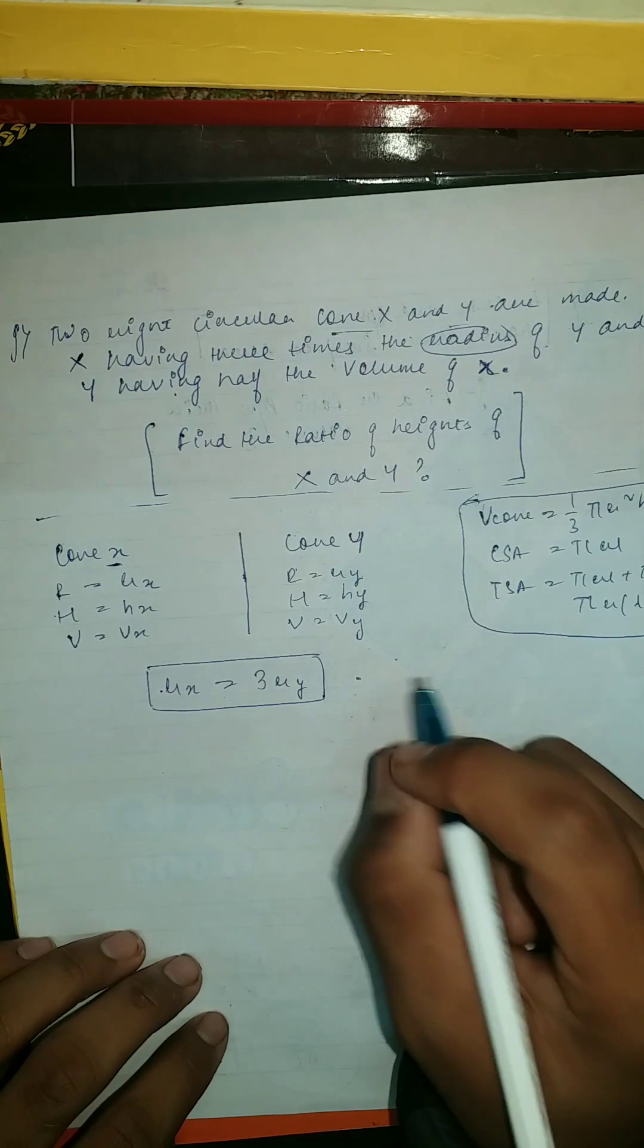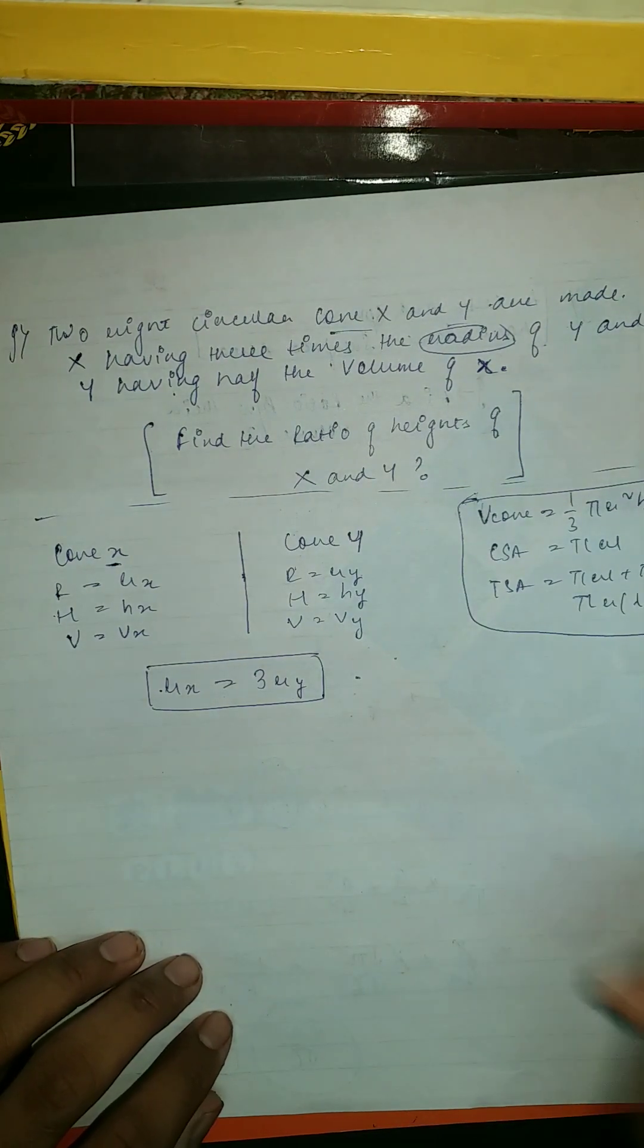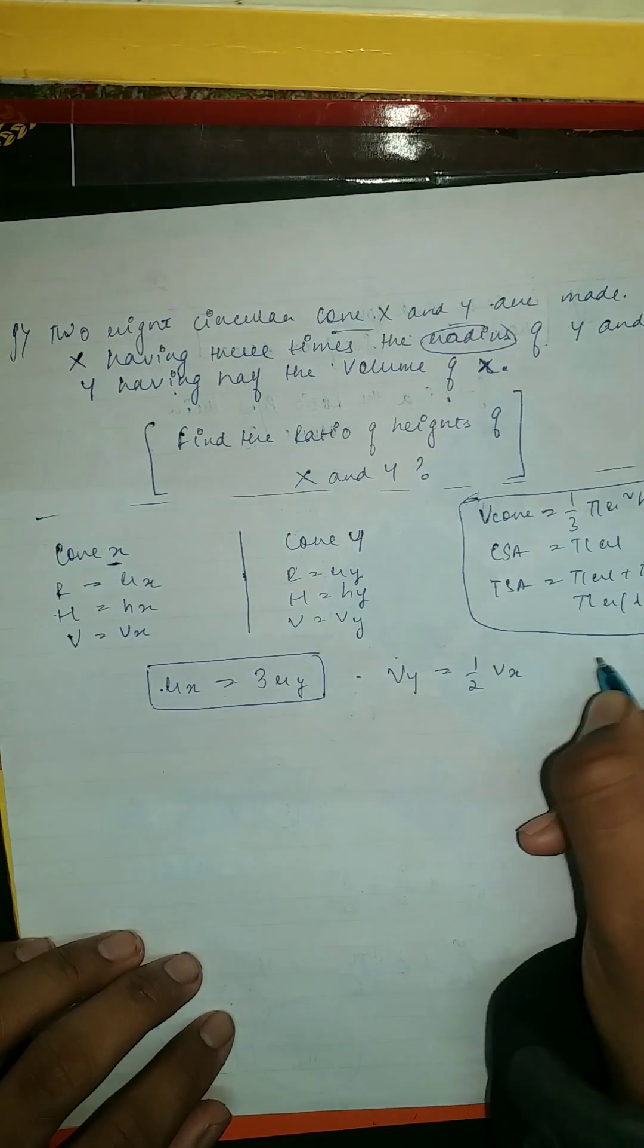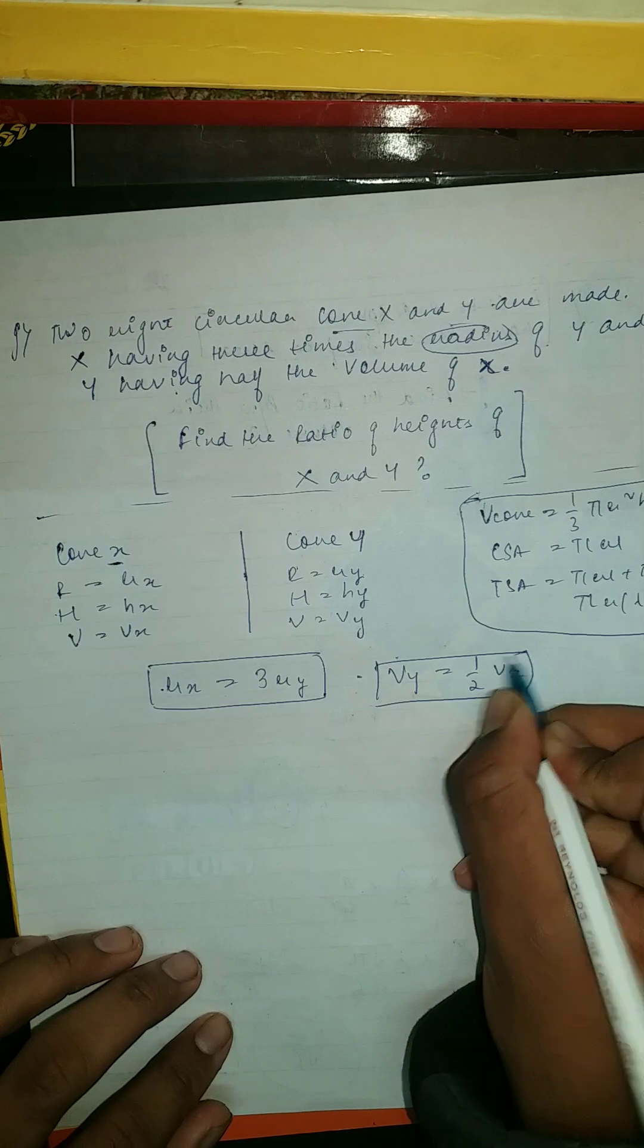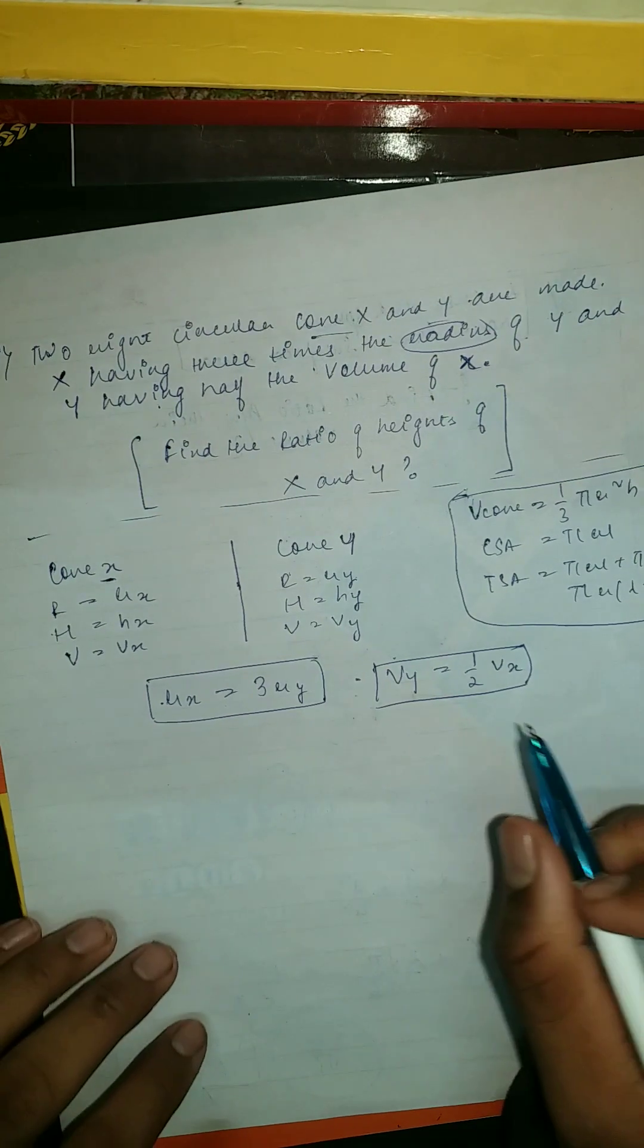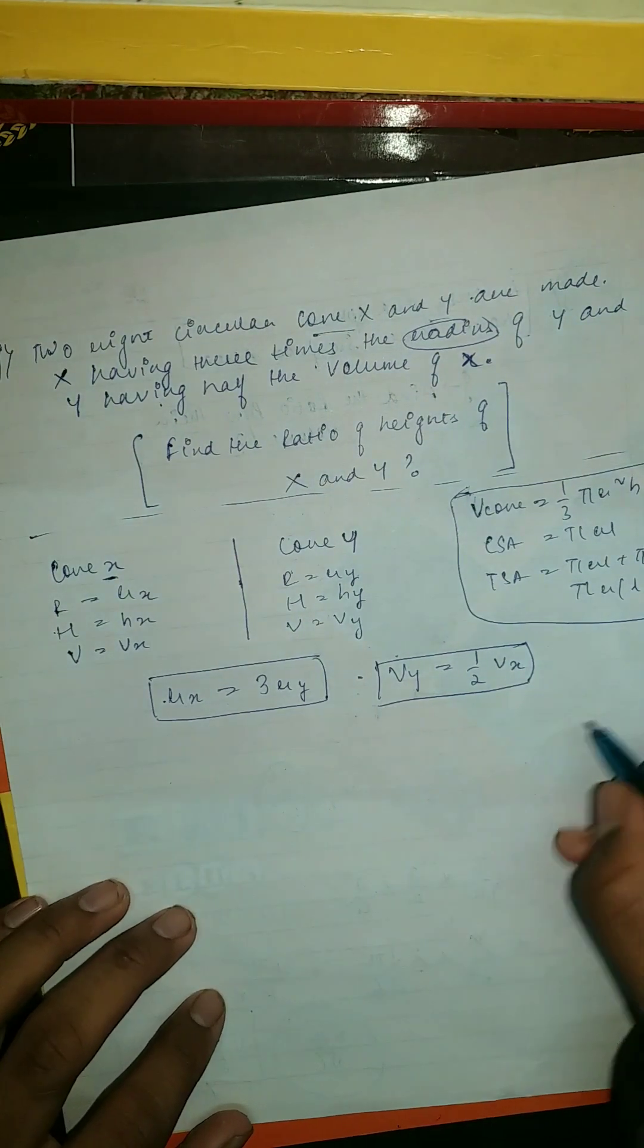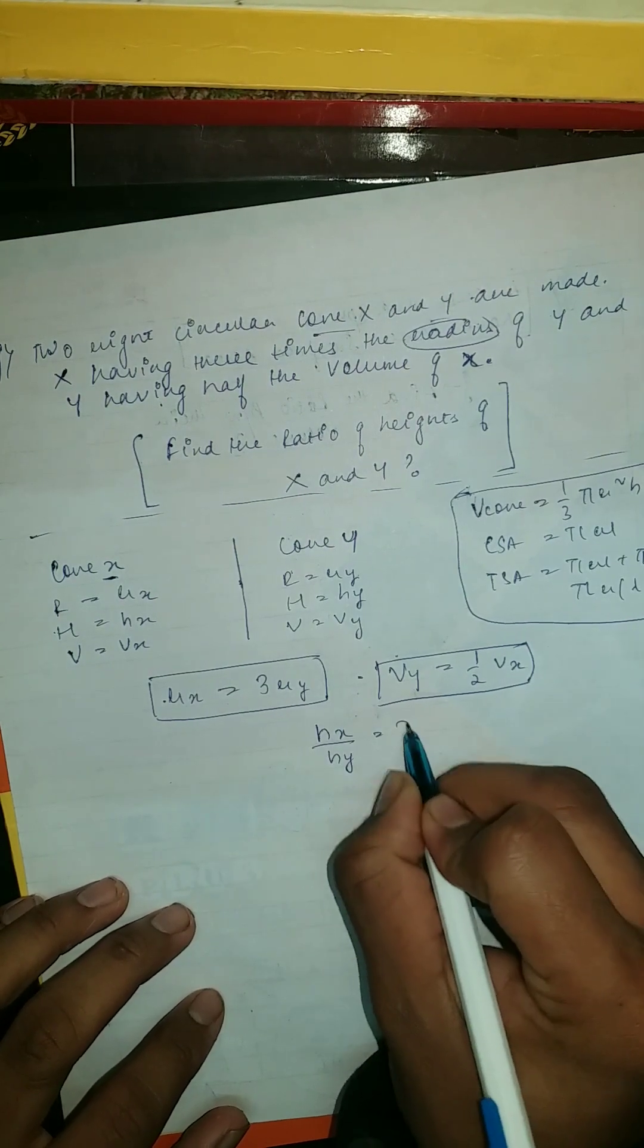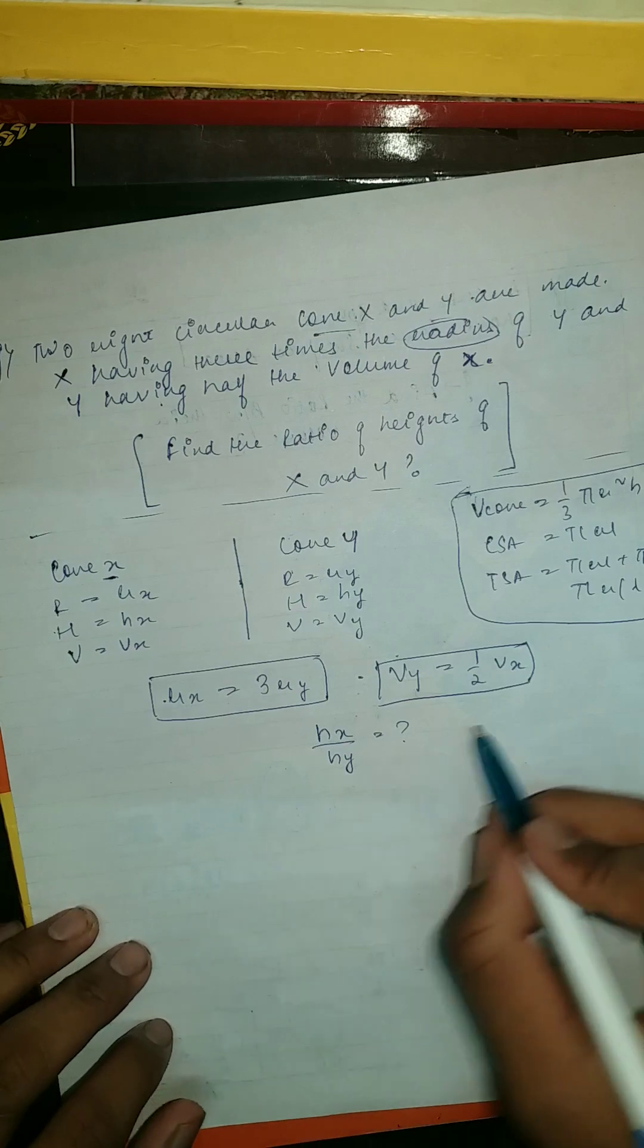Second, it is written that Y having half the volume of X. So it means volume of Y equal to half the volume of X. Now it's very easy. We have to find the ratio hx/hy.